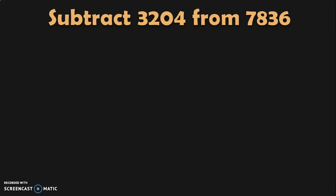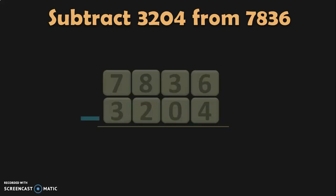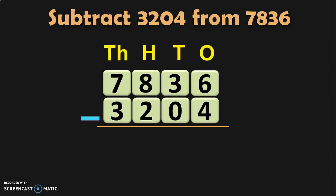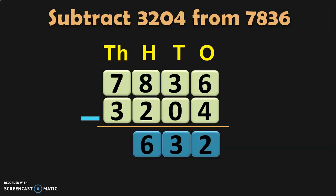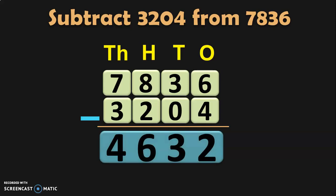The next example is subtract 3,204 from 7,836. Here we have two 4-digit numbers, but the second number has a 0. Write the numbers one below the other with place values. Ones: 6 minus 4 — before 6: 5, 4, 3, 2. Tens: 3 minus 0 — from the properties of zero, when 0 is subtracted from any number, you get the same number, so 3 minus 0 is 3. Hundreds: 8 minus 2 is 6. Thousands: 7 minus 3 is 4. The difference between 7,836 and 3,204 is 4,632.